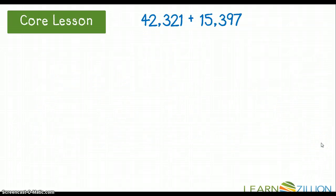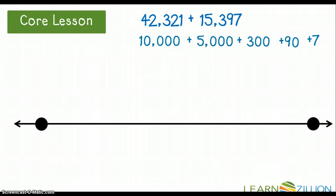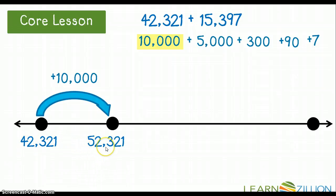Let's take a look at another set of numbers and add them together using our open number line. My largest number between these two is 42,321. I'm going to break the second number down into expanded form — you guys should be professionals at expanded form by now. I draw my open number line starting at 42,321, and the first number I'm adding is 10,000, giving me 52,321.